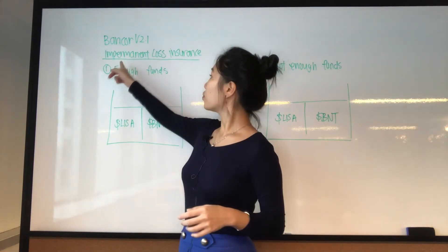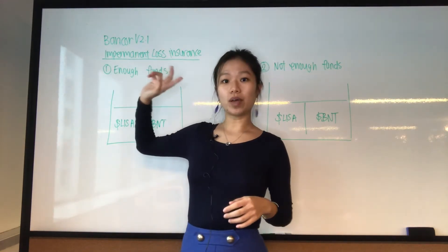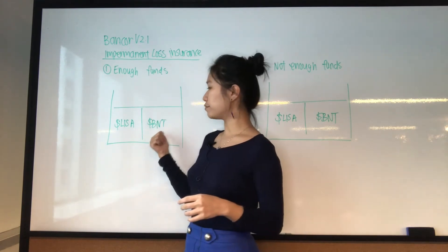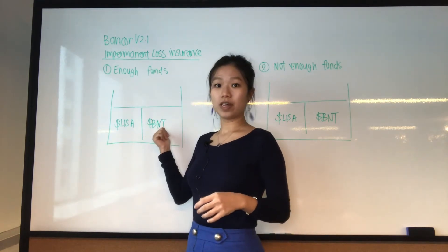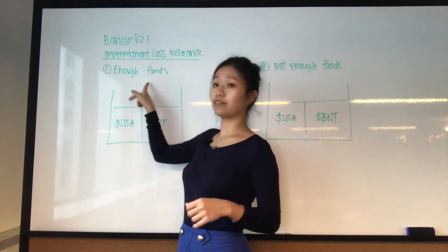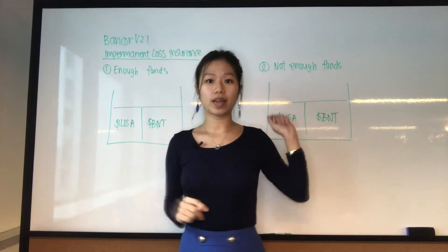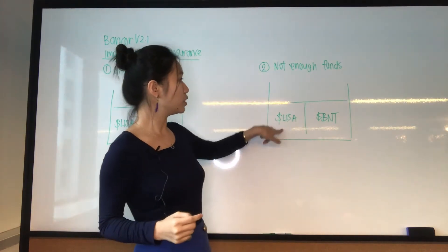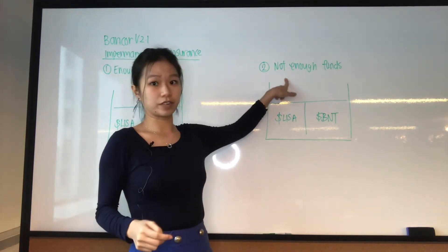When we talk about impermanent loss, there are two situations. The first one is where the fund itself — the liquidity pool — has enough funds. And the second is where the liquidity pool does not have enough funds.